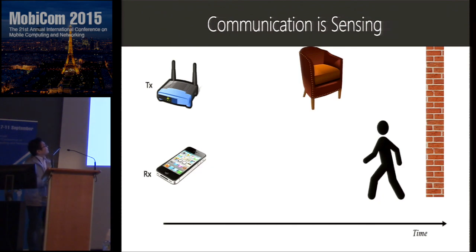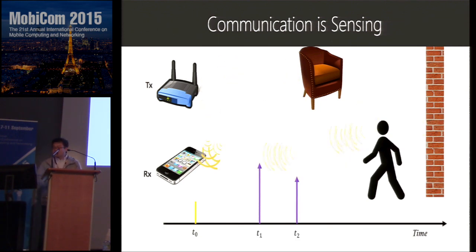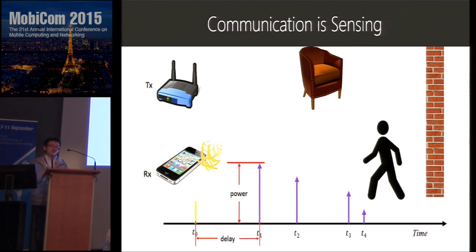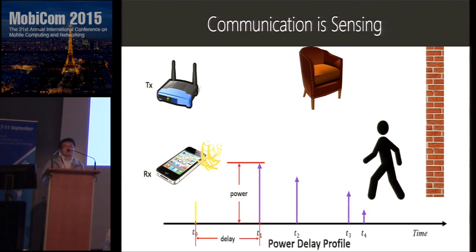Nowadays Wi-Fi communication is becoming sensing. When we look at a wireless signal transmitted at time point T0, this signal will be reflected by objects in the environment and received at the receiver. By analyzing the received signal, we can estimate the power intensity and the time delay of each individual signal copy, and we get a profile of the wireless channel called the power delay profile. From this profile we can extract useful information about the environment — for example, we may estimate that there are three objects because we receive four copies of the original signal, one from the direct path.